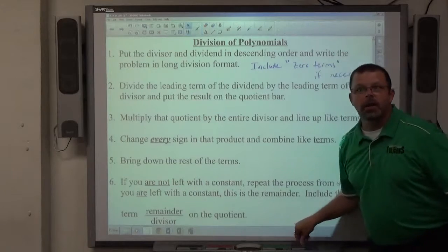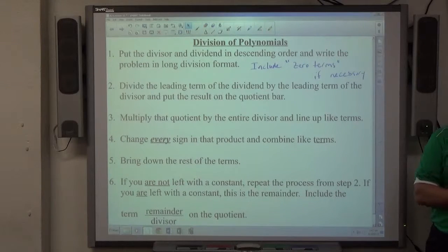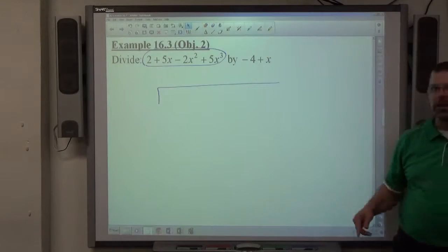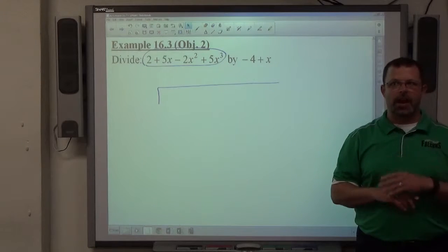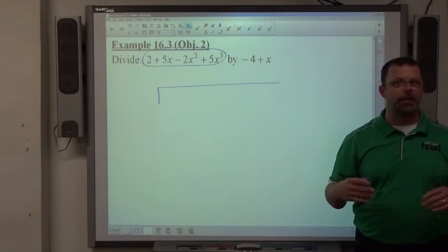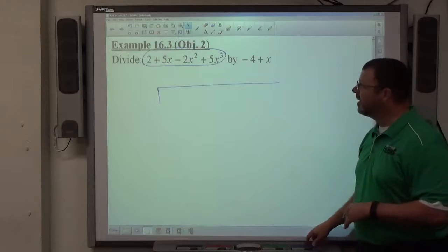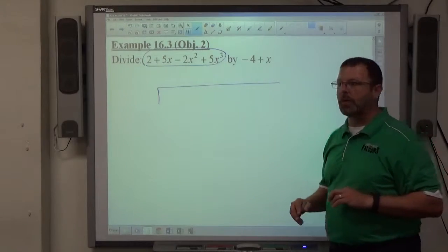And include zero terms if necessary. Zero terms, if you have a highest power of x cubed, which we have here, that means x squared, x, and constant have to show up also. If they're there, fine. If they're not, you put a zero term to replace it. It's going to happen in example four, so we'll see that when it happens.